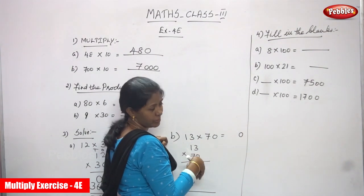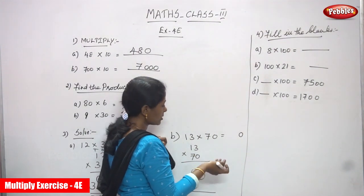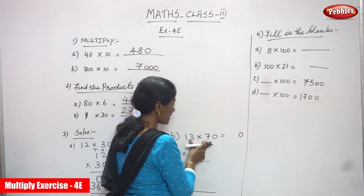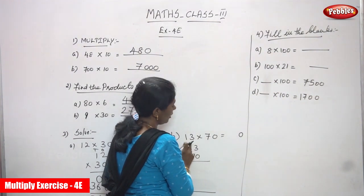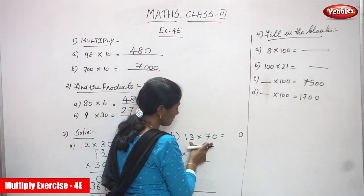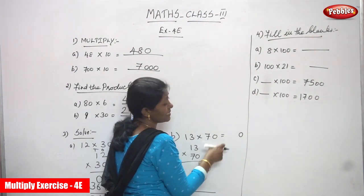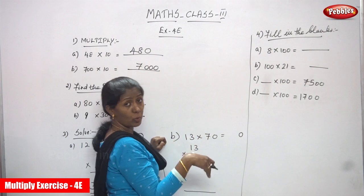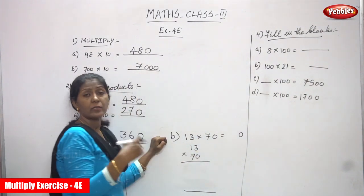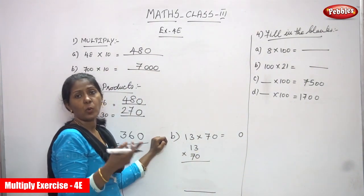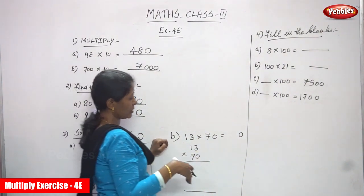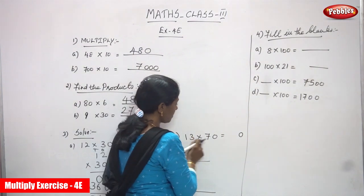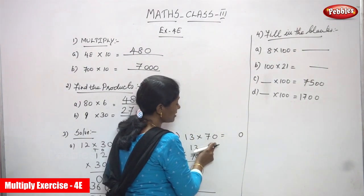That is the first rule. The second rule: first multiply the number, then add the zero at the end. Count the zeros, then add them at the end. I'll repeat once again — if you multiply by 10, you must see how many zeros there are.